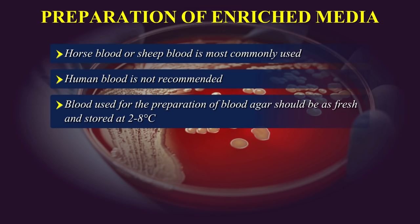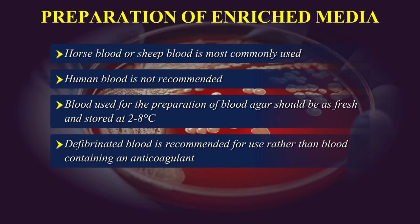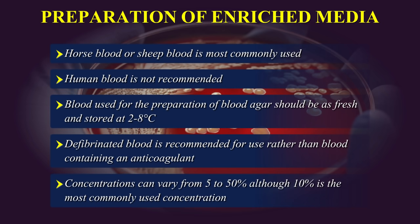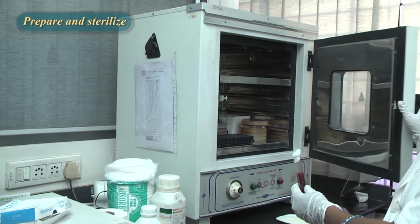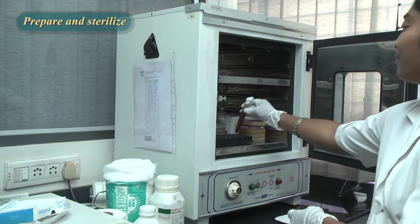Blood used for the preparation of blood agar should be as fresh as possible and should have been stored at 2–8 degrees centigrade, taking care that it is not frozen. Defibrinated blood is recommended rather than blood containing an anticoagulant. Concentrations can vary from 5 to 50%, although 10% is the most commonly used. Prepare and sterilize the nutrient agar base as mentioned earlier.